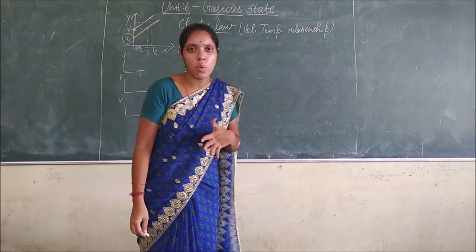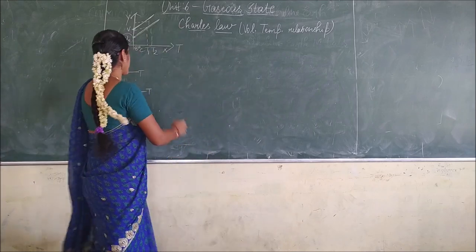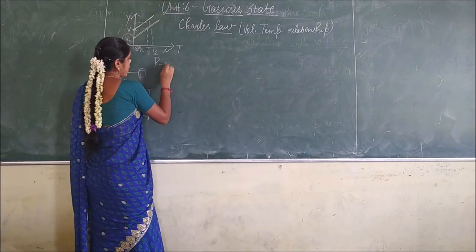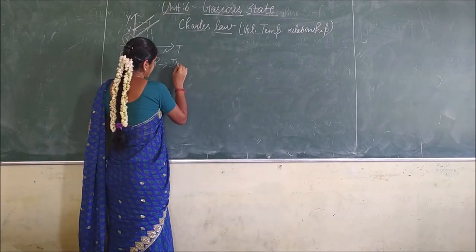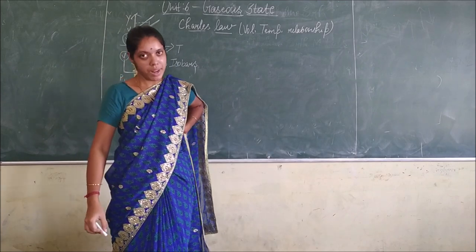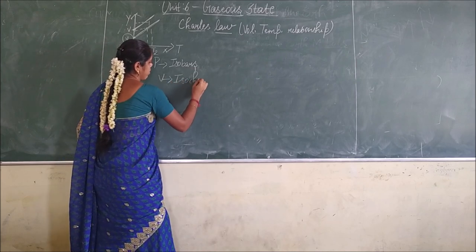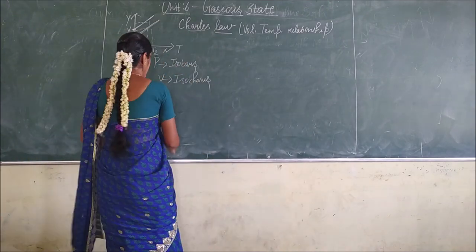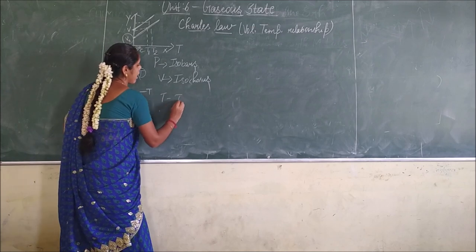We plot the temperature and the volume in the graph. When we plot the graph for volume and temperature, here there is volume and also temperature, and we keep the pressure constant. If you keep the pressure constant, it is called iso-baric. When pressure is constant, it is said to be iso-baric. If you plot the graph for pressure and temperature keeping volume constant, it is iso-choric.